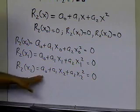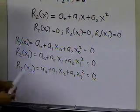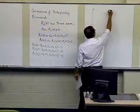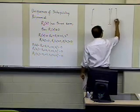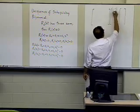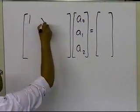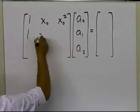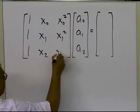Once we have three unknowns — a0, a1, and a2 — let's write this in matrix form to make it clearer what we are looking for and how we can show that R2 of x is identically equal to zero. The unknowns are a0, a1, and a2, and the coefficient matrix has rows: 1, x0, x0²; then 1, x1, x1²; then 1, x2, x2².